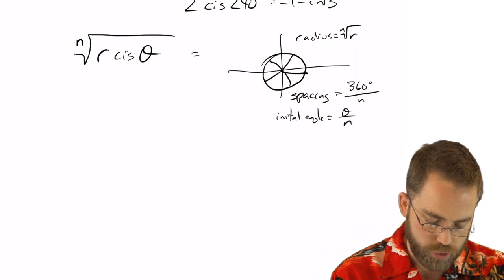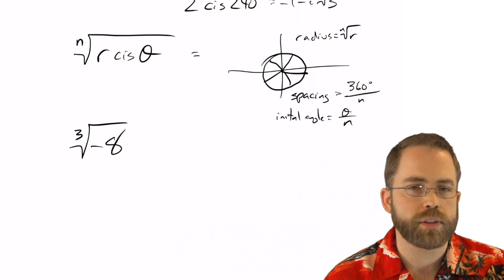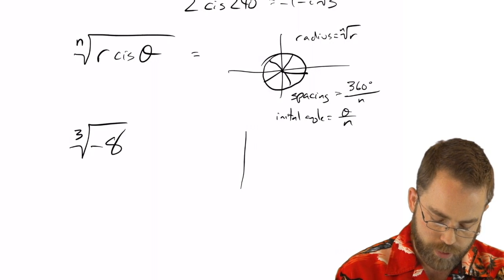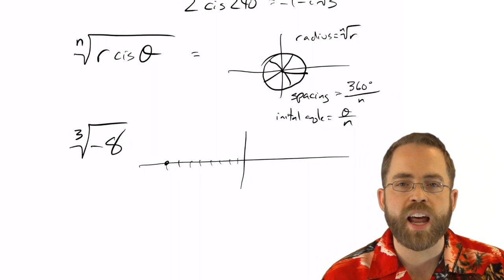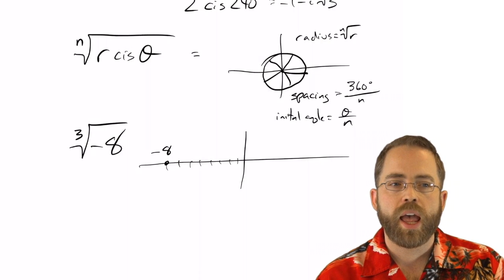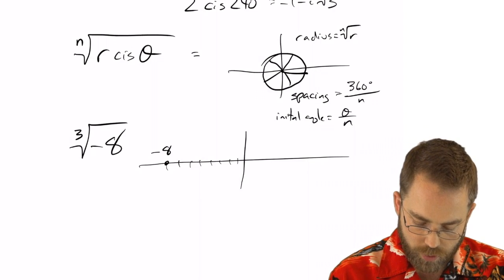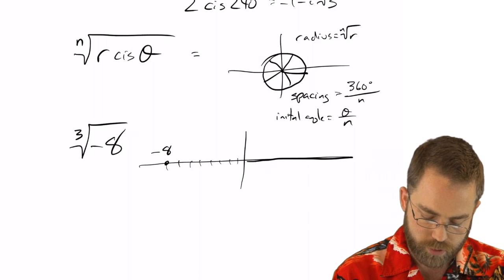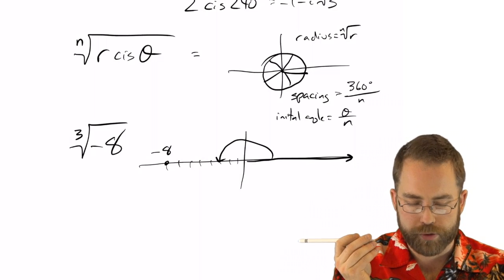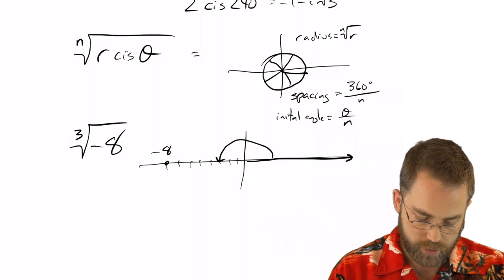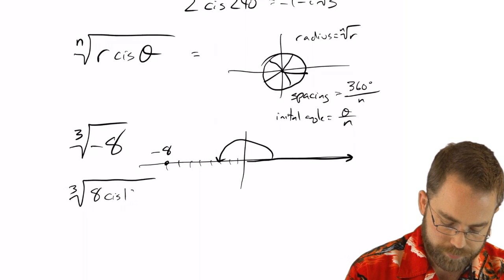So the first thing we're going to have to do is we're going to have to convert this into cis. So where are we? If we've got a number line and 1, 2, 3, 4, 5, 6, 7, 8, negative eight in the real and nothing in the imaginary is over there like that. And we don't want to use negative radii. We always want to use positive radii in cis. So remember we always start off facing this direction. So we need to turn 180 degrees and be facing to the left and then walk out eight units. So this is the same thing as the cube root of eight cis 180.